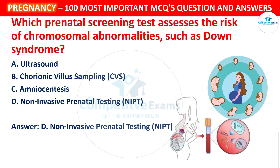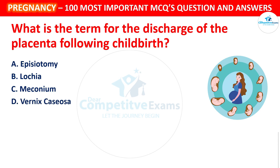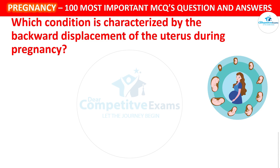Next question: What is the term for the discharge of the placenta following childbirth? Your options: Episiotomy, Lochia, or Vernix caseosa. The correct answer is Lochia. Lochia is the postpartum discharge containing blood, mucus, and uterine tissue that occurs after the delivery of the placenta.